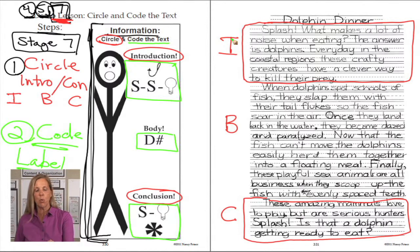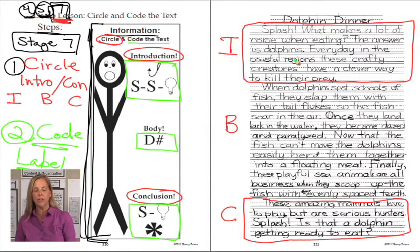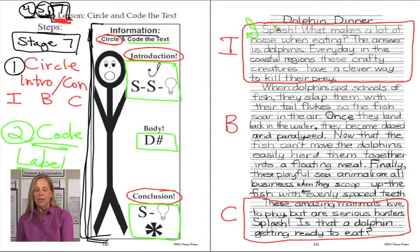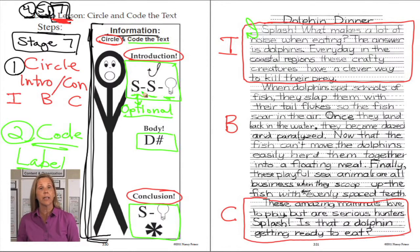Let's go to our paper and go to the introduction. We are looking for a hook. So we have: Splash. What makes a lot of noise when eating? The answer is dolphins. There's our hook — so we will label this part with a hook, we'll actually draw a hook there. Once we have our hook, next we need to identify the SS light bulb — our big idea. The first S is setting — we're looking for when and where. Setting is optional; you don't always have a setting unless you need it.